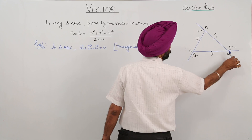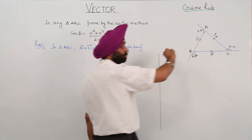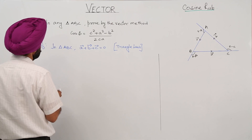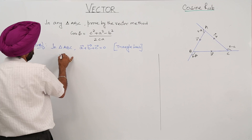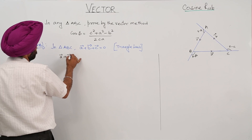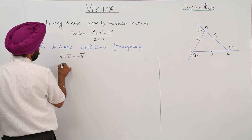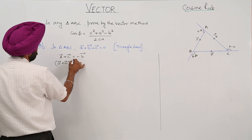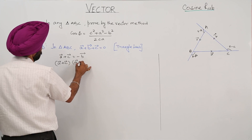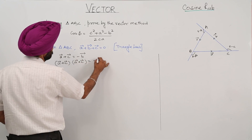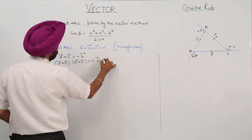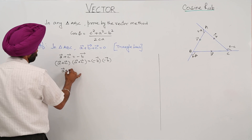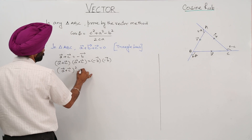We are going towards this direction, then towards the next, then again coming to the initial point. So vector a plus vector c is equal to minus vector b.